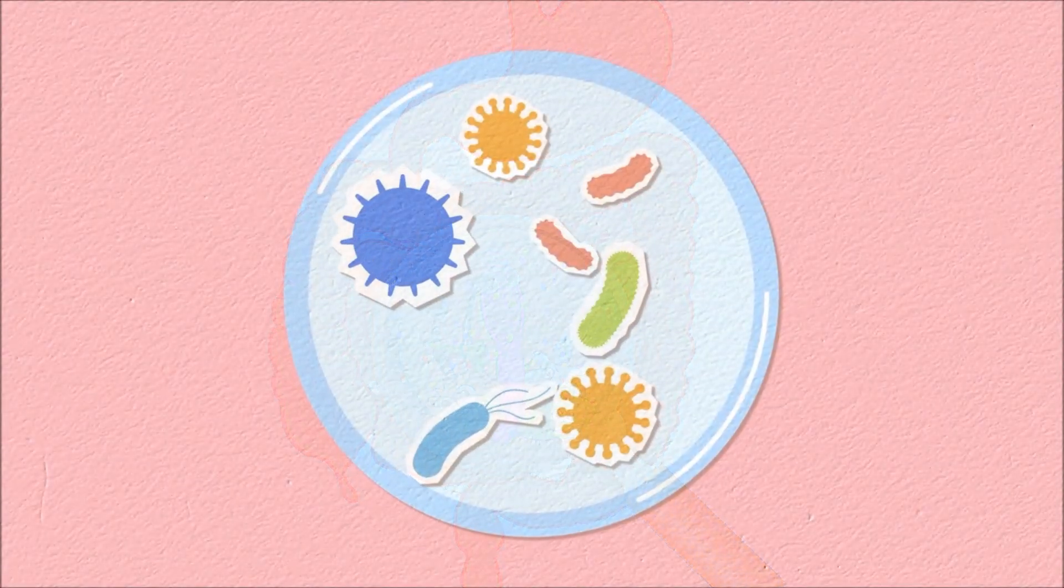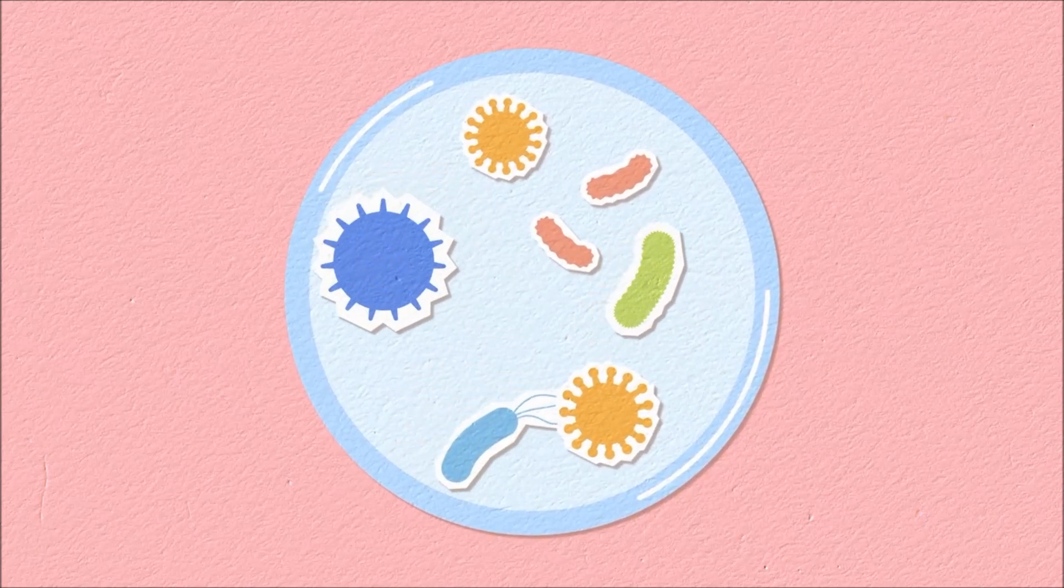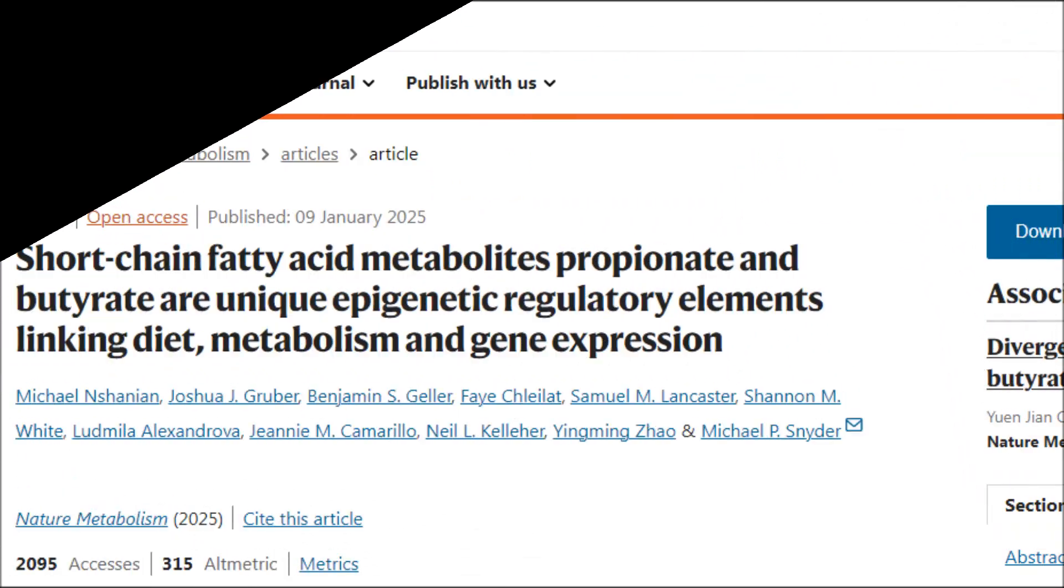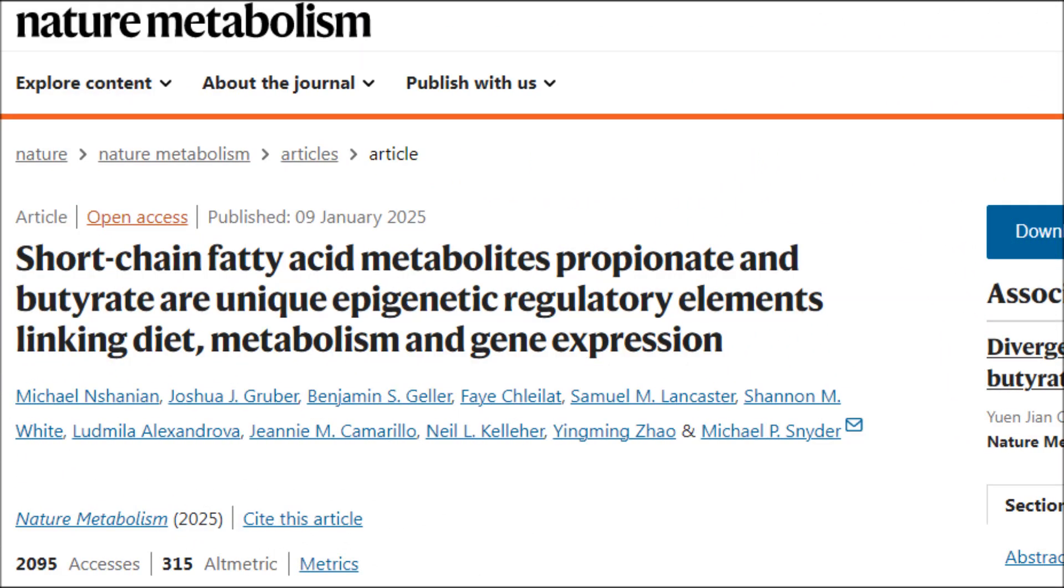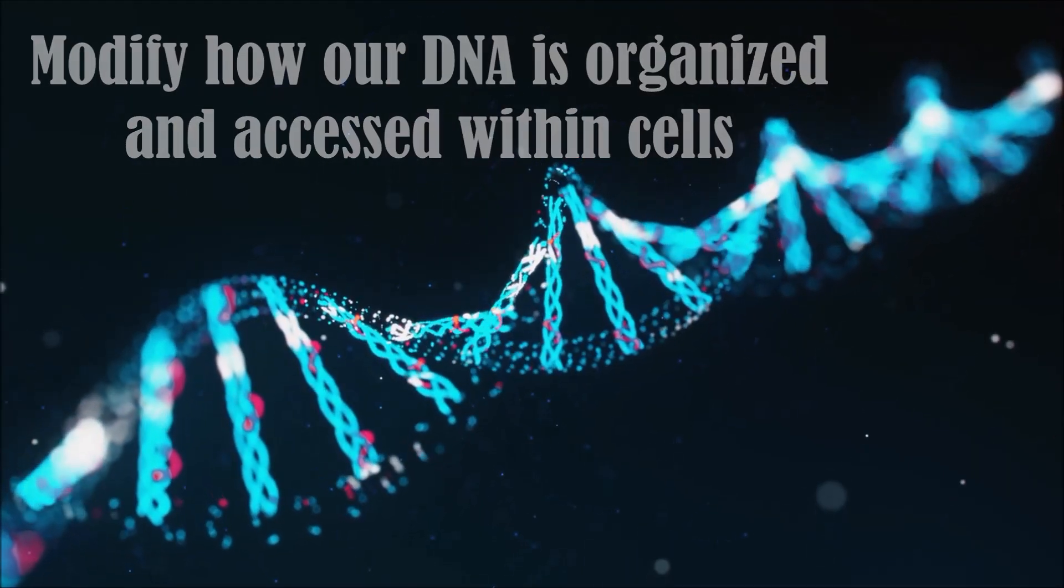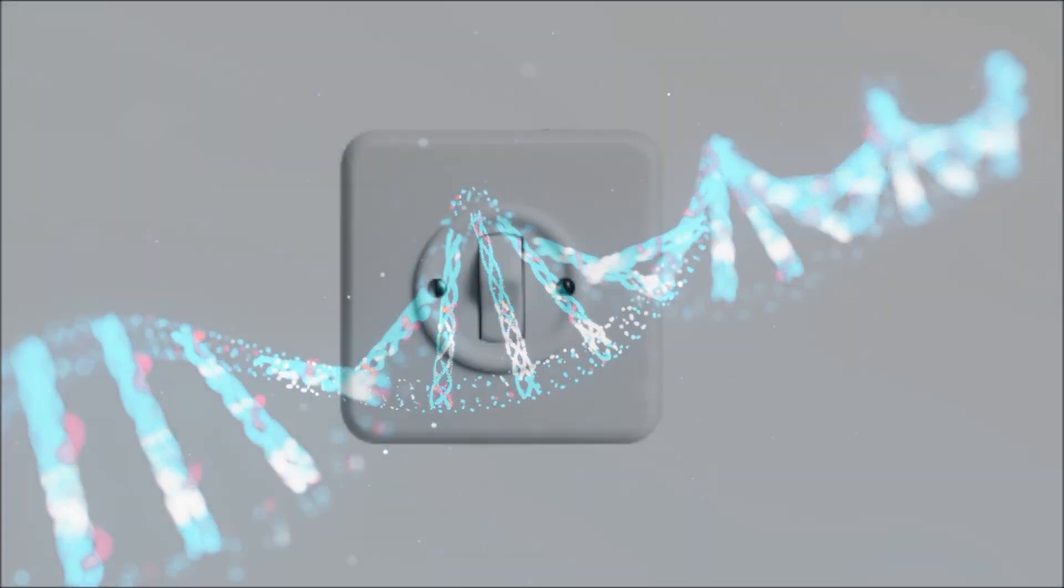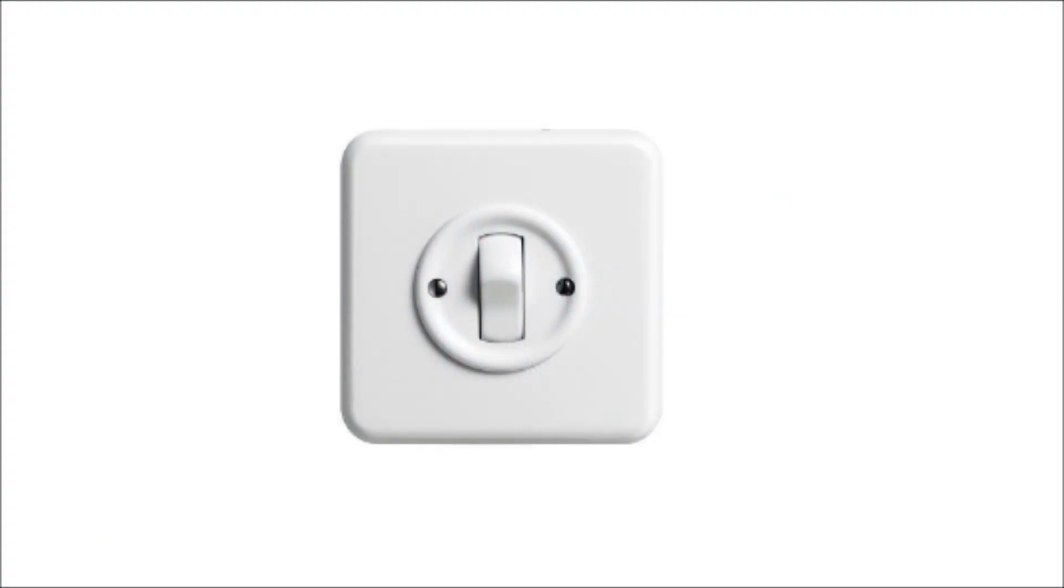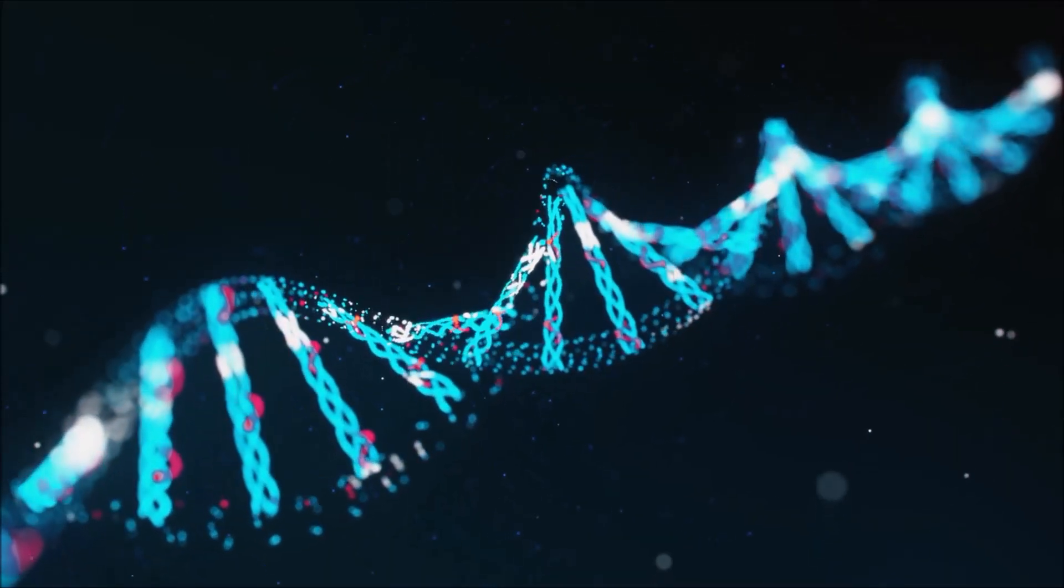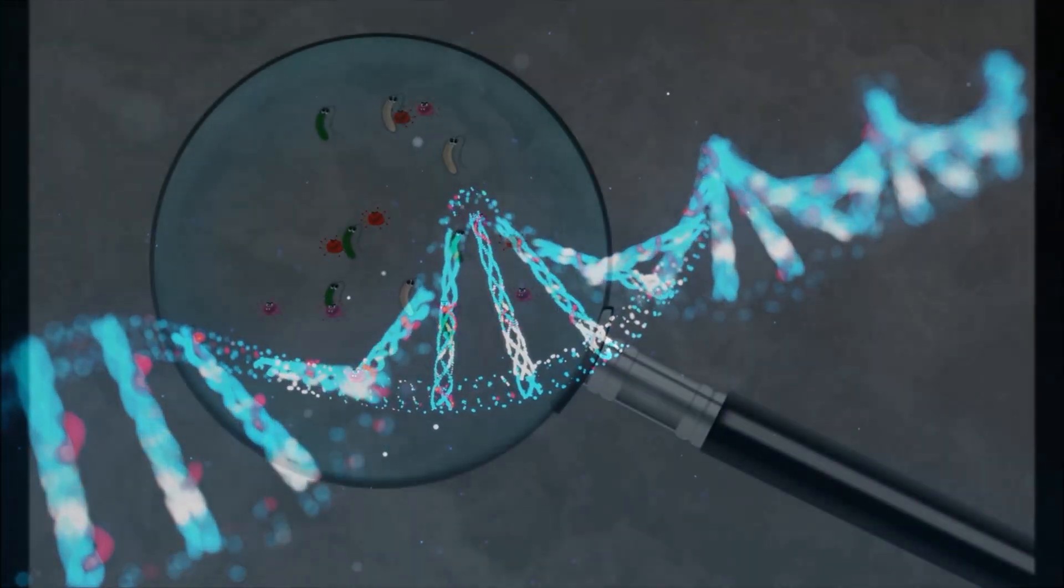So do you remember earlier when Dr. Greger talked about those postbiotics like butyrate, acetate, and propionate? Well, researchers at Stanford University School of Medicine have just discovered that butyrate and propionate directly modify how our DNA is organized and accessed within cells. Specifically when it comes to cancer, they act like molecular switches, attaching to specific proteins called histones that package our DNA. They ultimately affect which genes get turned on or off.